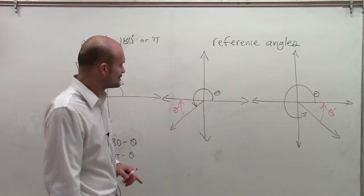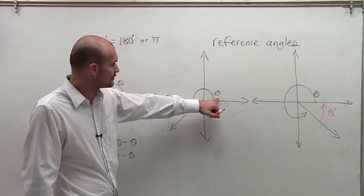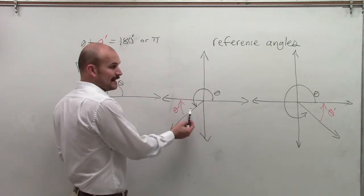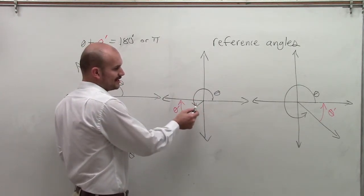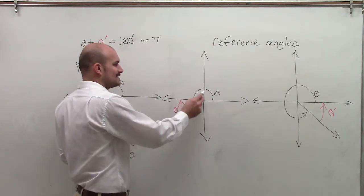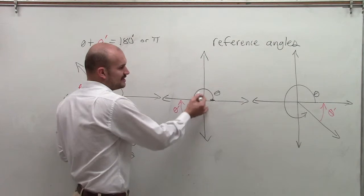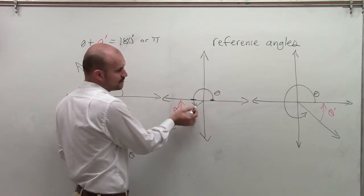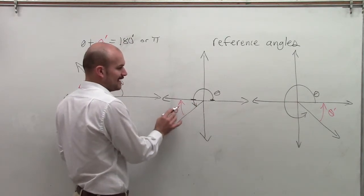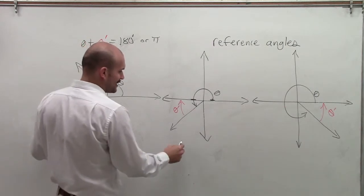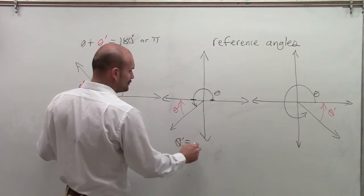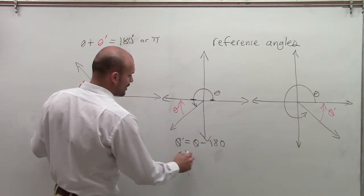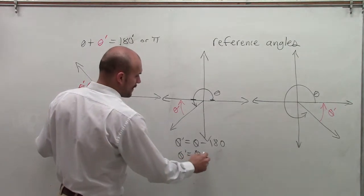For an angle in the third quadrant, theta is greater than 180 degrees. If I take theta and subtract the 180-degree portion, I'm left with just the extra arc, which equals theta-prime. So here, theta-prime equals theta minus 180 degrees, or theta-prime equals theta minus pi — again, depending on whether you're working in degrees or radians.